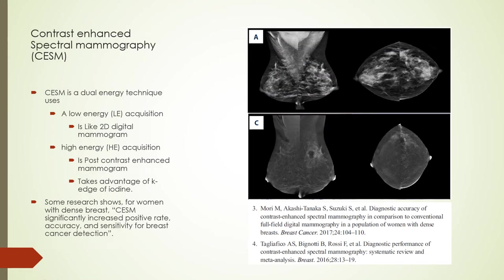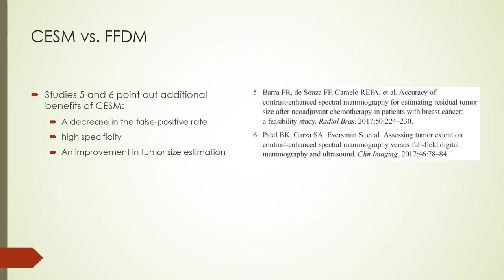Contrast-enhanced spectral mammography (CESM) is a dual-energy subtraction technique using two acquisitions: a low-energy acquisition similar to 2D digital mammography, and a high-energy post-contrast-enhanced mammogram utilizing the K-edge effect of iodine. Compared with traditional 2D digital mammography, CESM significantly increases accuracy and sensitivity for breast cancer detection in women with dense breasts. Additional benefits over full-field digital mammography include a decrease in the false positive rate, high specificity, and improved tumor size estimation.